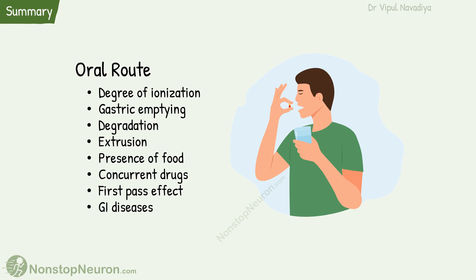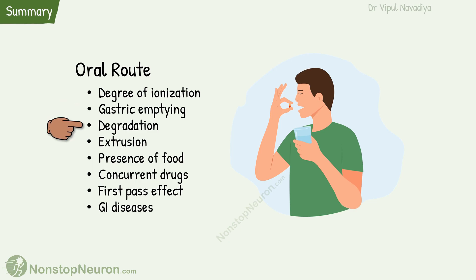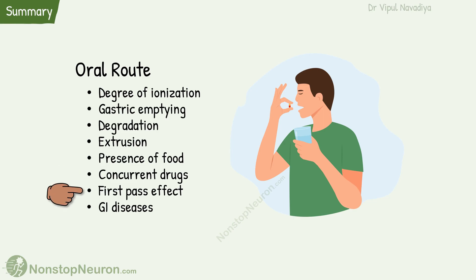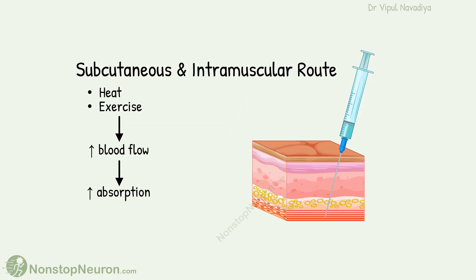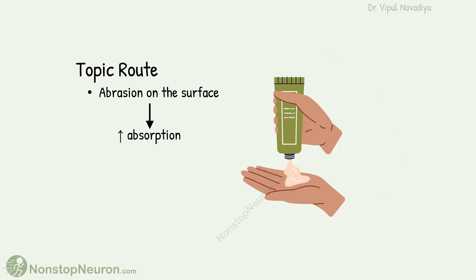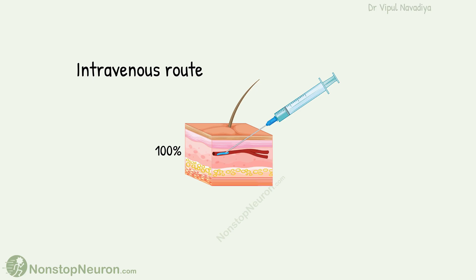Now let's have a quick summary. In the oral route, the degree of ionization affects how much portion of the drug is available for absorption. However, most of the drug is absorbed from the intestine, regardless of ionization, because of the higher surface area of the intestine. For the same reason, gastric emptying increases absorption. Degradation and extrusion decrease the absorption of some drugs. The presence of food and concurrently given drugs also affect absorption. First-pass metabolism decreases the bioavailability of some drugs. Gastrointestinal diseases also affect absorption. In the subcutaneous and intramuscular routes, heat and exercise increase absorption by increasing blood flow. On topical administration, abrasion on the surface increases absorption. Bioavailability in the intravenous route is 100%, and nothing can affect this.